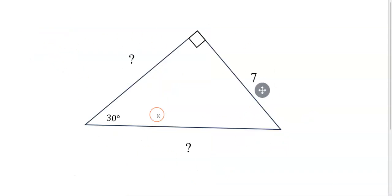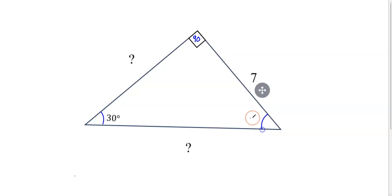Now I want to double-check that I have a 30-60-90 degree triangle. Here's my 30 degree angle, this box means 90 degrees, and even though this angle isn't given we can figure out it has to be 60 degrees — because the interior angles of a triangle always total 180. 60 plus 90 plus 30 equals 180 degrees.